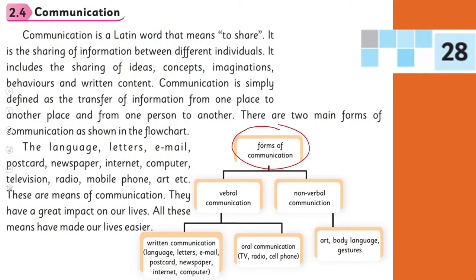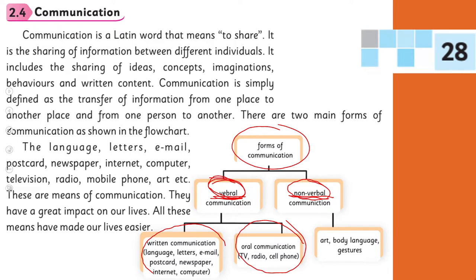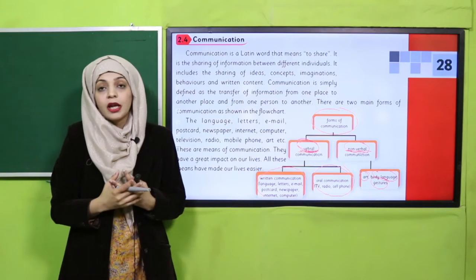Kaunsi forms of communication hain? Baat ko doosron tak pahunchane ki do zariye hain. Verbal — jin mein alfaz ka istamal ho — and non-verbal — jis mein lafzon ka istamal nahi hota. Verbal means words, non-verbal means without words. Verbal communication depends on written communication and oral communication, whereas non-verbal communication includes art, body language, gestures, and eye contact.